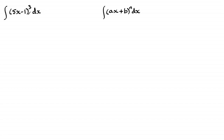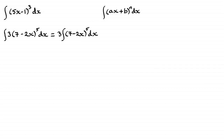You could expand this out and then integrate all the terms, but what I'm going to show you in this video is a much simpler way, leading to a very simple answer. I wouldn't encourage you to expand that. You might find a question something like this, which is in this form. We could pull out the 3 in front of the integral sign, leaving us with an ax plus b to the power n type of integral. Our a is minus 2, b is 7, and the power n is 5.